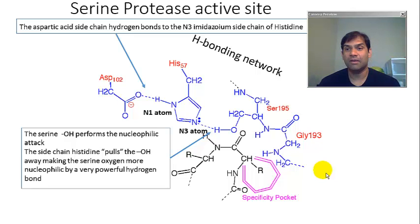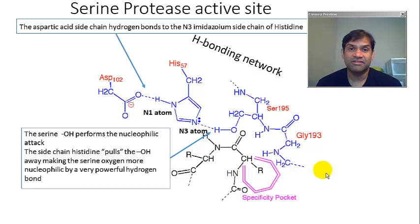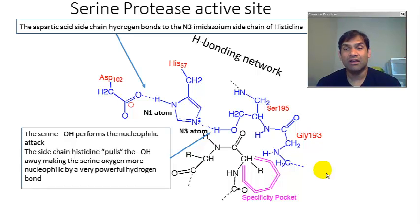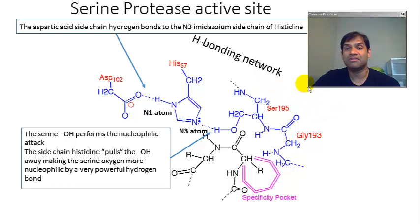All serine proteases, regardless of whether they come from bacteria or higher mammalian organisms, have three conserved amino acid residues. This is one of the reasons why serine proteases are of paramount importance to study, because they are a classic example of convergent evolution, where a serine protease from Bacillus versus one from our digestive tract may have divergent three-dimensional or tertiary structures, but the catalytic triad consisting of these three conserved amino acid residues would still be present. This catalytic triad consists of three conserved universal amino acids amongst all serine proteases.